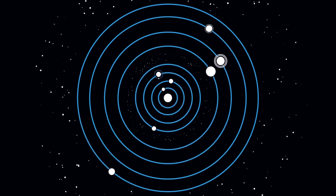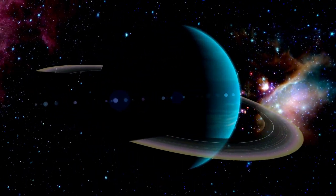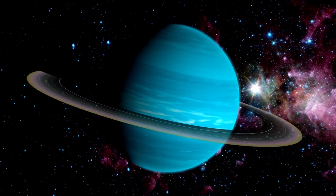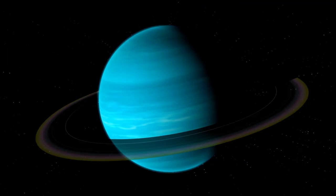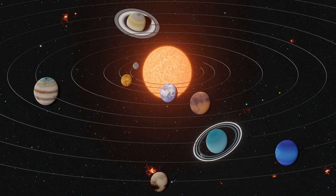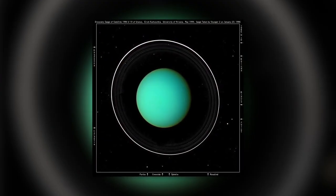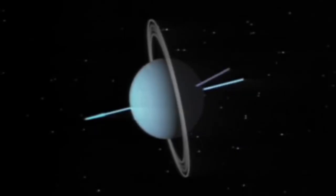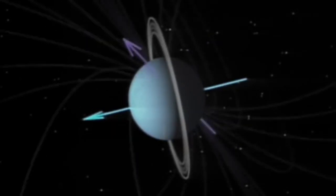Uranus is the only planet whose equator is nearly at a right angle to its orbit, with a tilt of 97.77 degrees, possibly the result of a collision with an Earth-sized object long ago. This unique tilt causes the most extreme seasons in the solar system. For nearly a quarter of each Uranian year, the sun shines directly over each pole, plunging the other half of the planet into a 21-year-long dark winter.